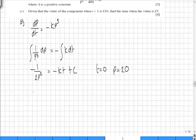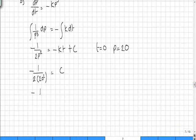So substituting in we're going to get minus 1 over 2 times 20 squared is equal to c. So we can see straight away that we're going to get minus 1 over 2 times 400, which is minus 1 over 800 equals c.